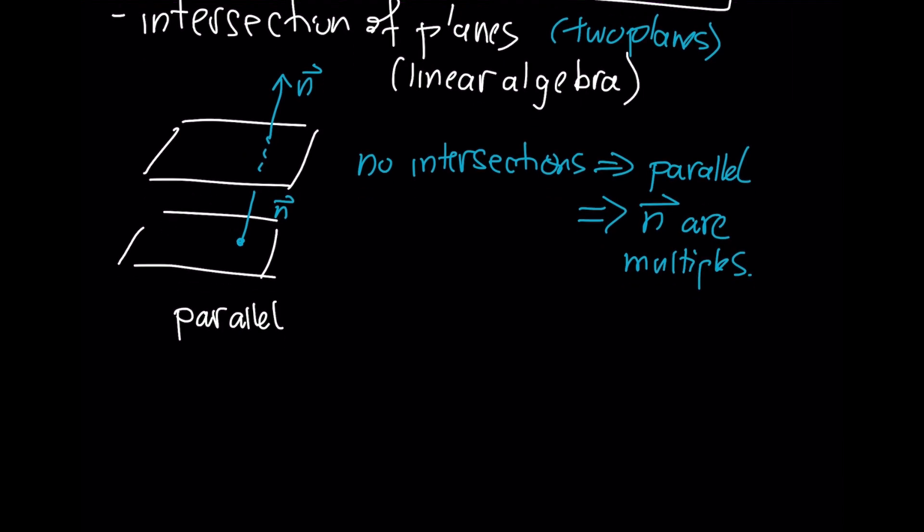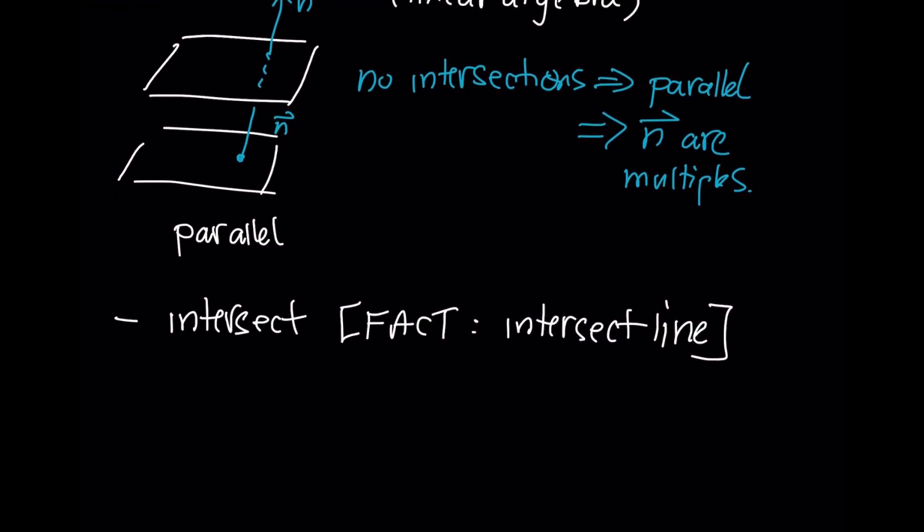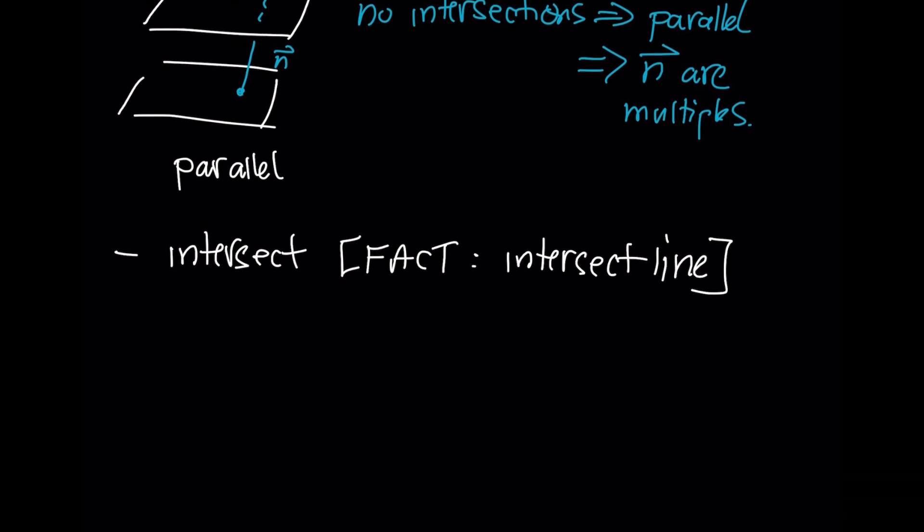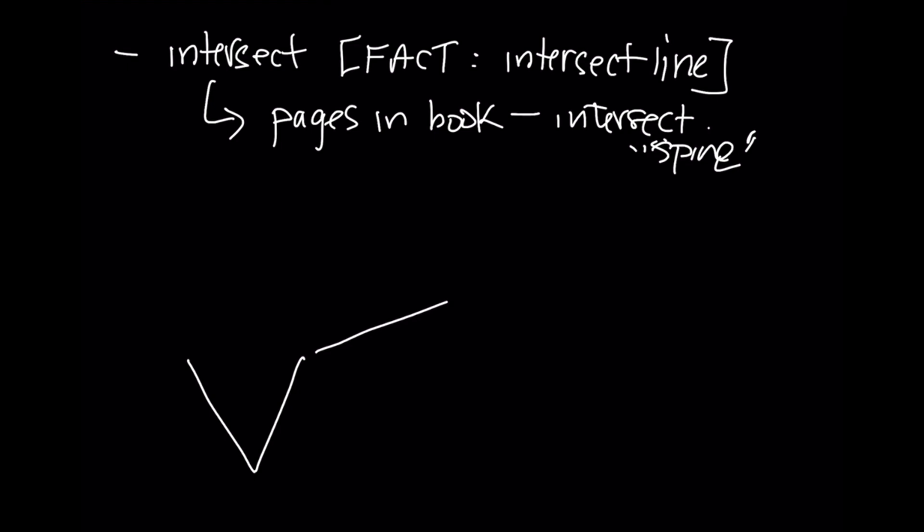If I have two planes and they intersect, it's a fact from linear algebra that they will intersect in a line. So if you have two planes intersecting, you can visualize it somewhat like this. You can think of it like pages in a book. And they will intersect in the spine of the book. You'll have one plane going like that and another plane going like this. This area right here, this is their intersection. And that's a line.